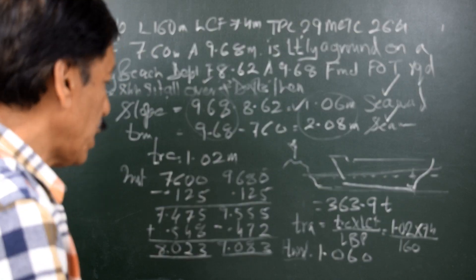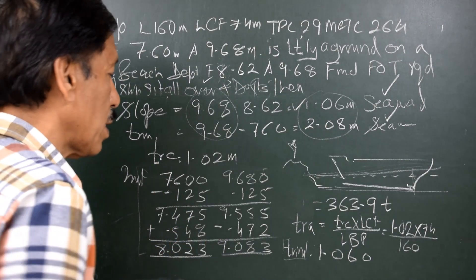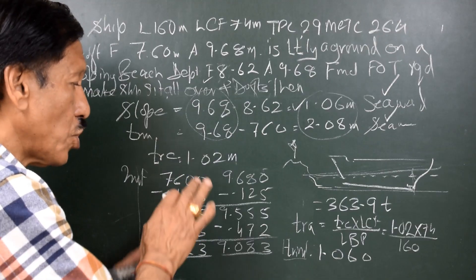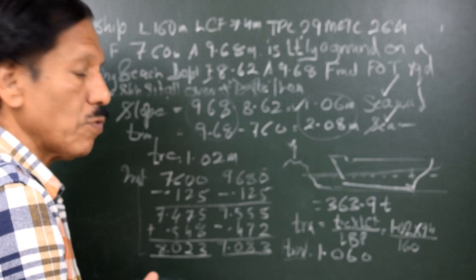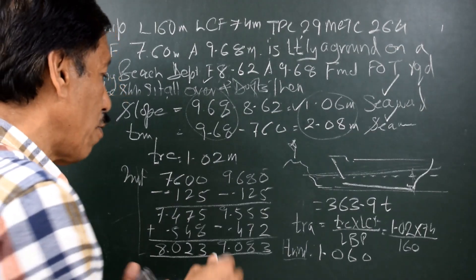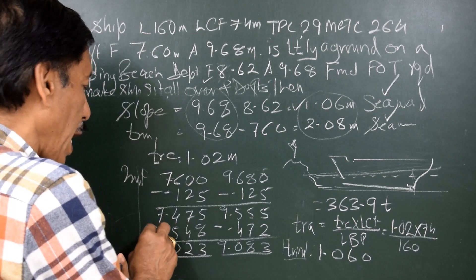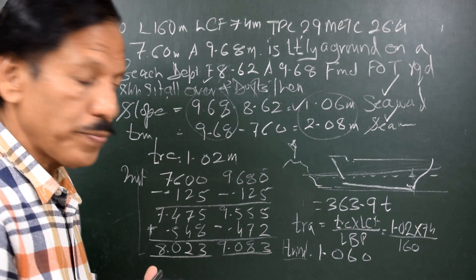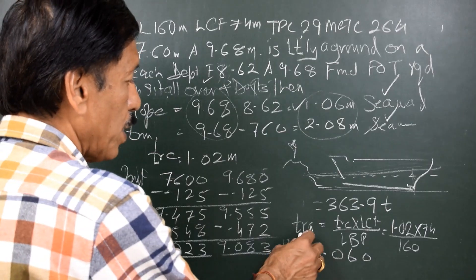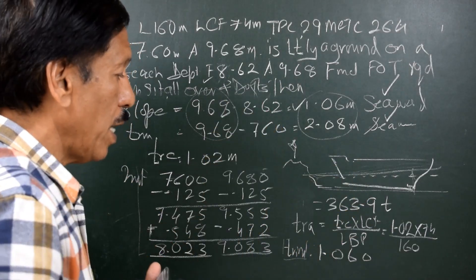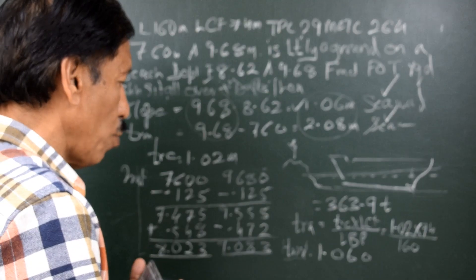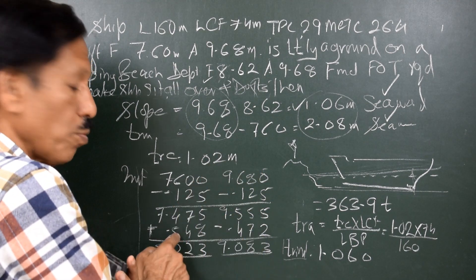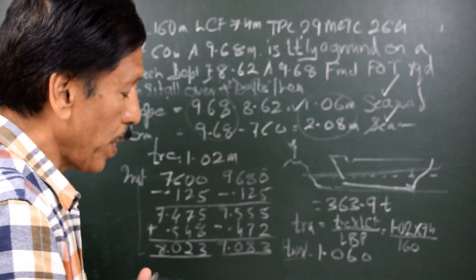And this is the standard trim format. We start with the initial draft, bodily rise both negative, and then change of trim forward ways. When the change of trim is forward ways, forward has to be positive and if the forward change is positive, aft change has to be negative. There is a usual formula: TRA is equal to TRC into LCF upon LBP and we get TRA as 0.472 meters and total trim change minus TRA gives me TRF that is 0.548 meters.